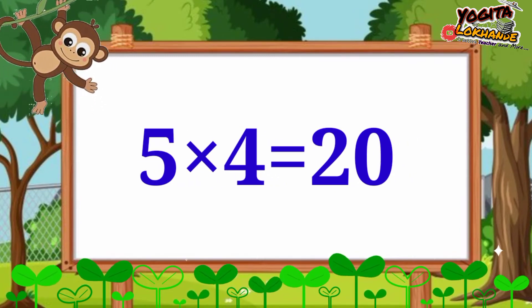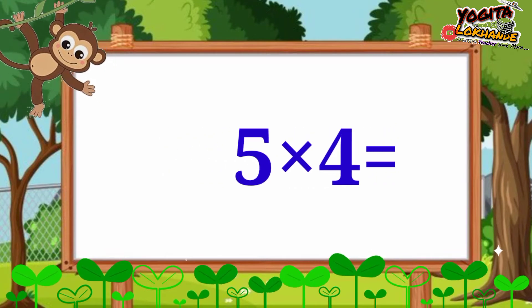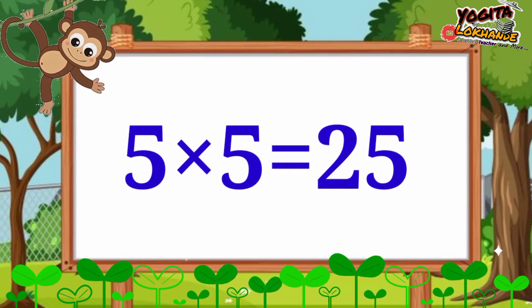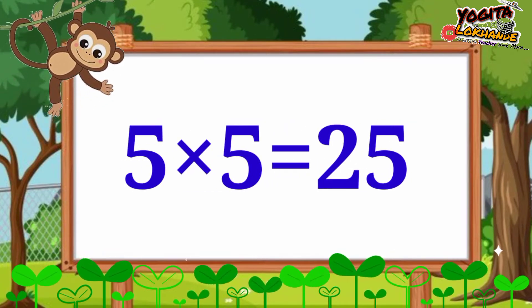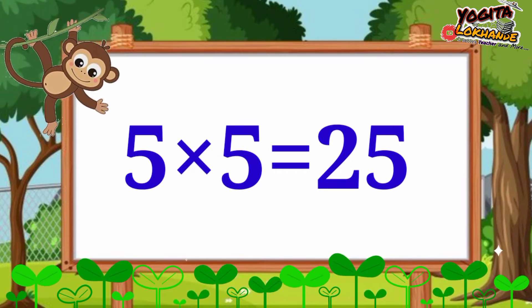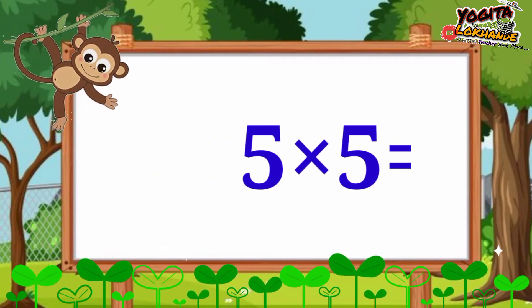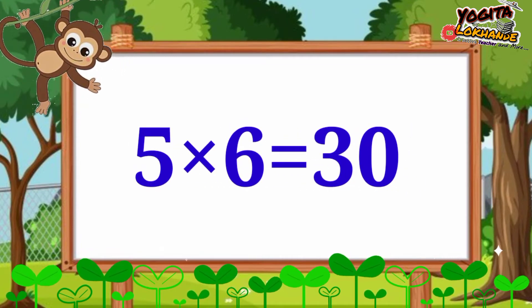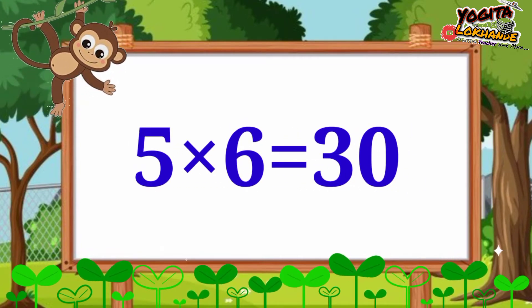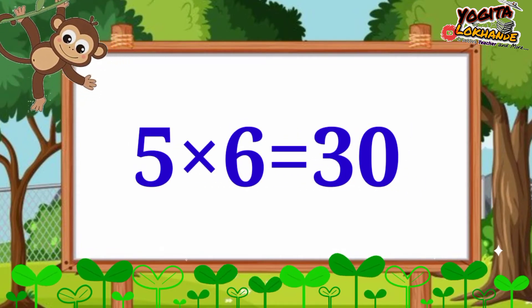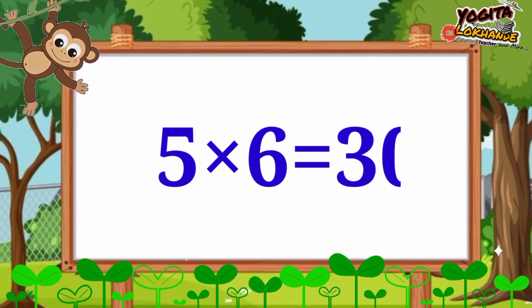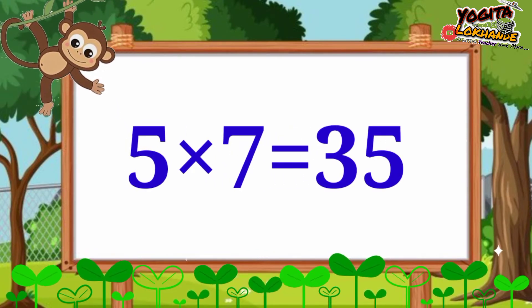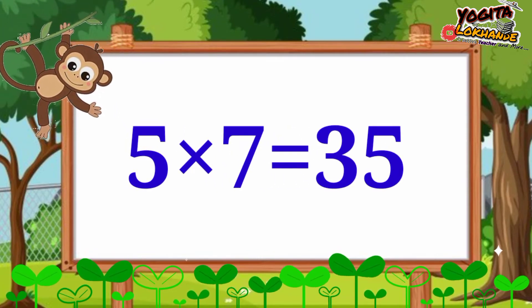Five fives are twenty-five. Five sixes are thirty. Five sevens are thirty-five.